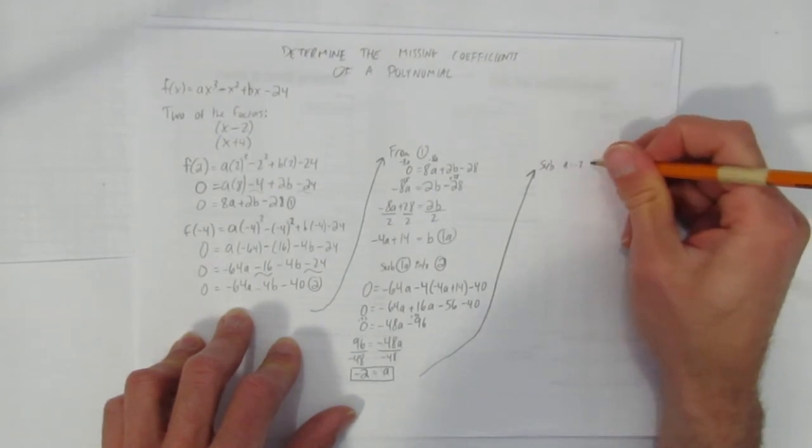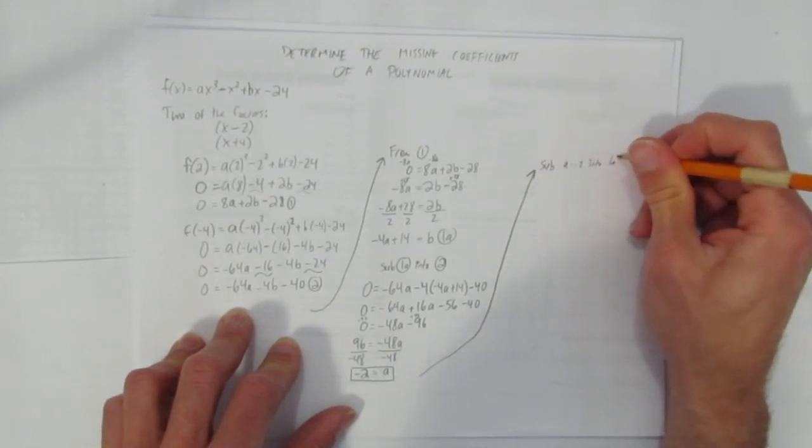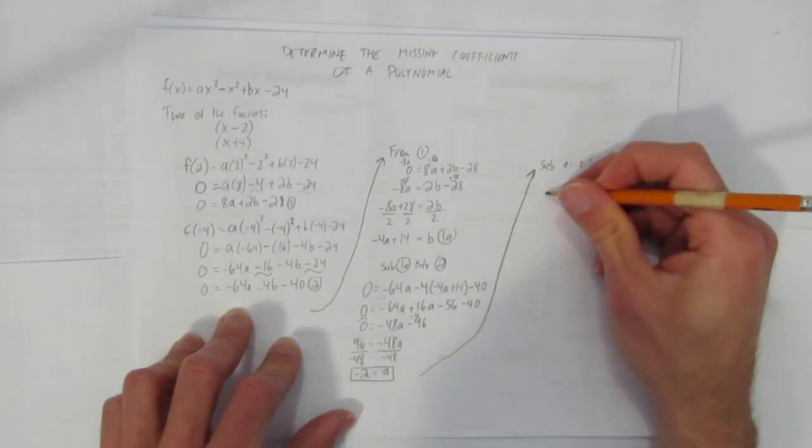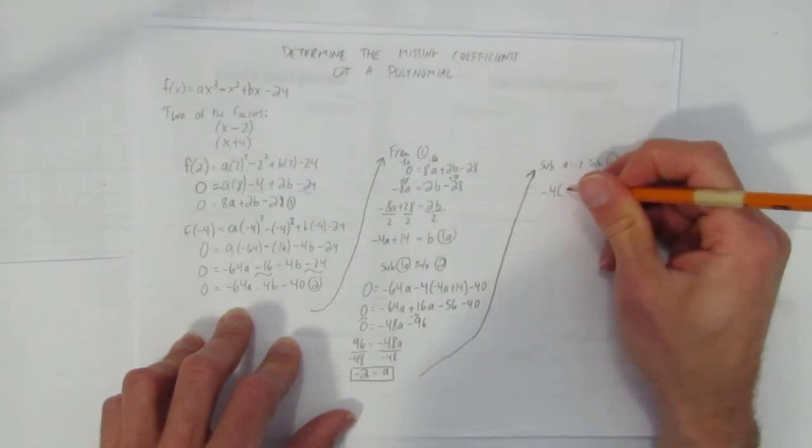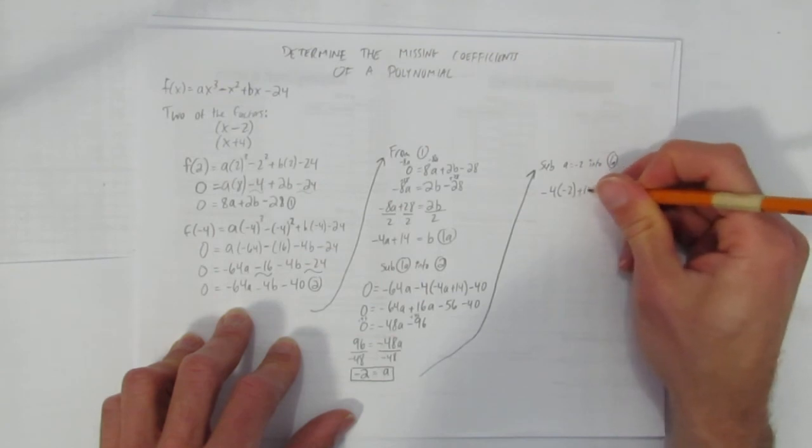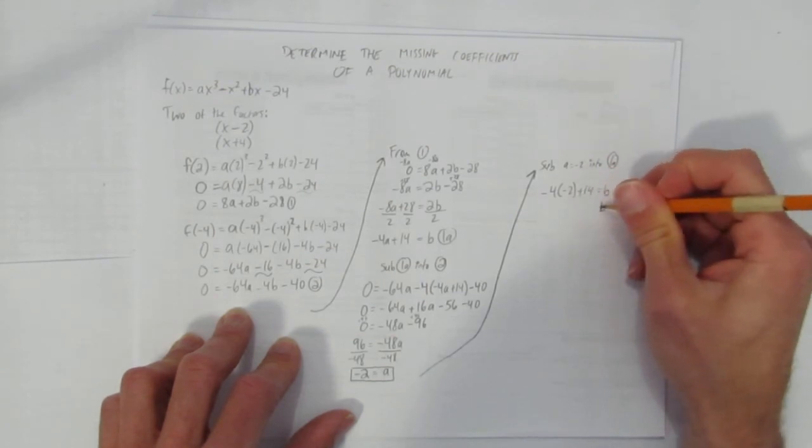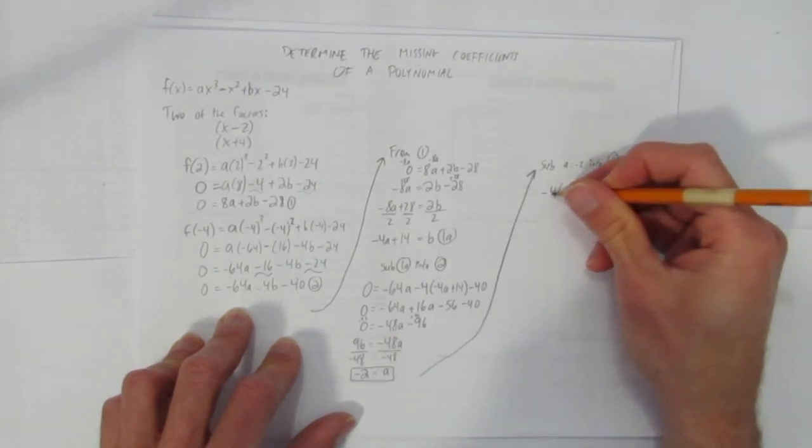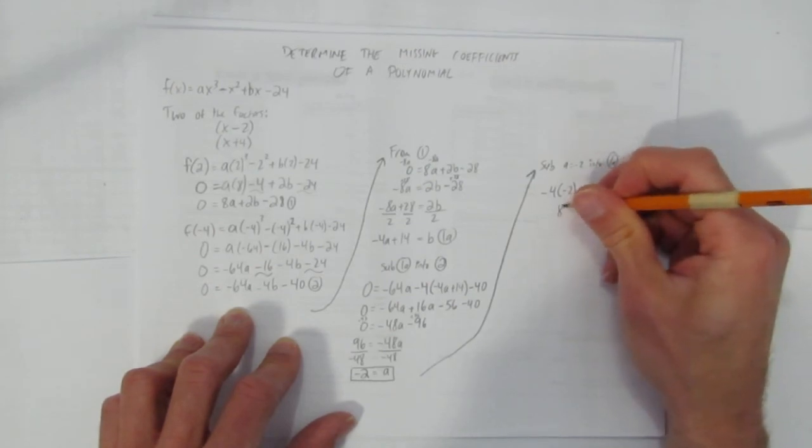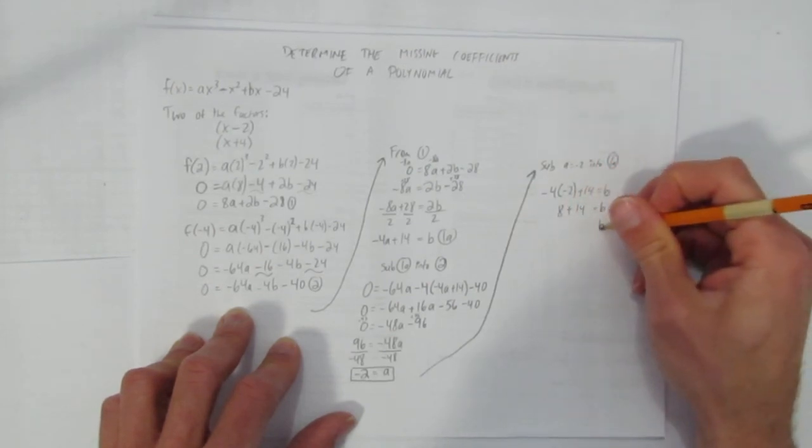So sub a equals negative 2 into 1a. And so I get negative 4 times a, which is negative 2, plus 14, equals b. I'm going to show my work just so I don't mess it up. Negative times a negative is positive. So you get 8 plus 14, and so b is 22.